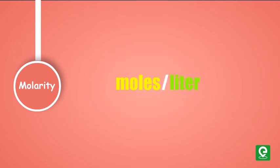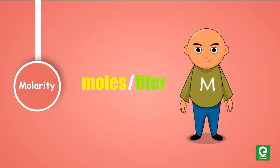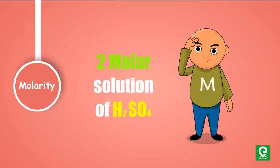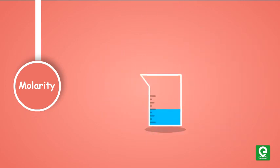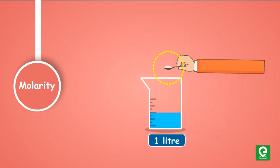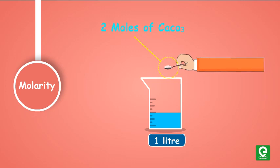So if someone asks you to prepare a two molar solution of H2SO4, then don't panic. All you are required to do is to add two moles of CaCO3 in one liter of the solution.